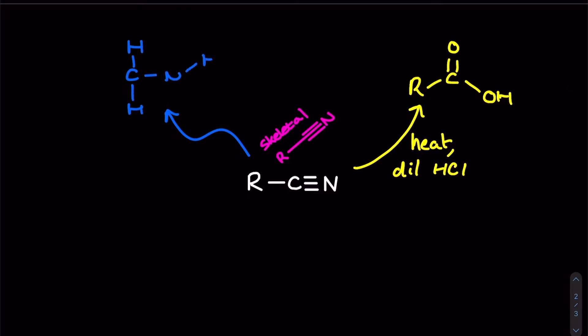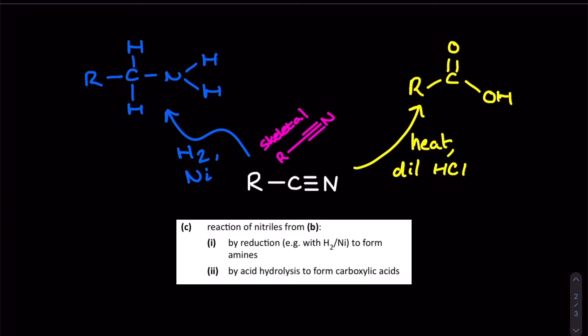This reaction converts our nitrile functional group into a primary amine and it uses the exact same reagents that we used in module 4 to convert an alkene to an alkane. That's right, for this reduction reaction to produce a primary amine from our nitrile we're using hydrogen and a nickel catalyst.